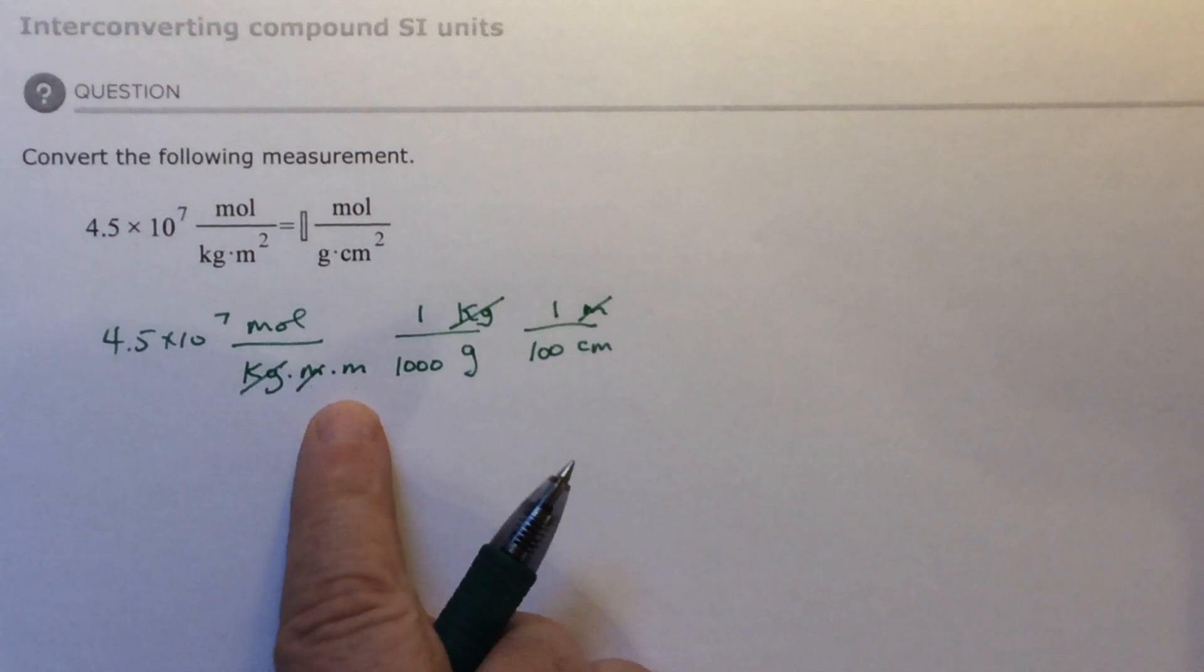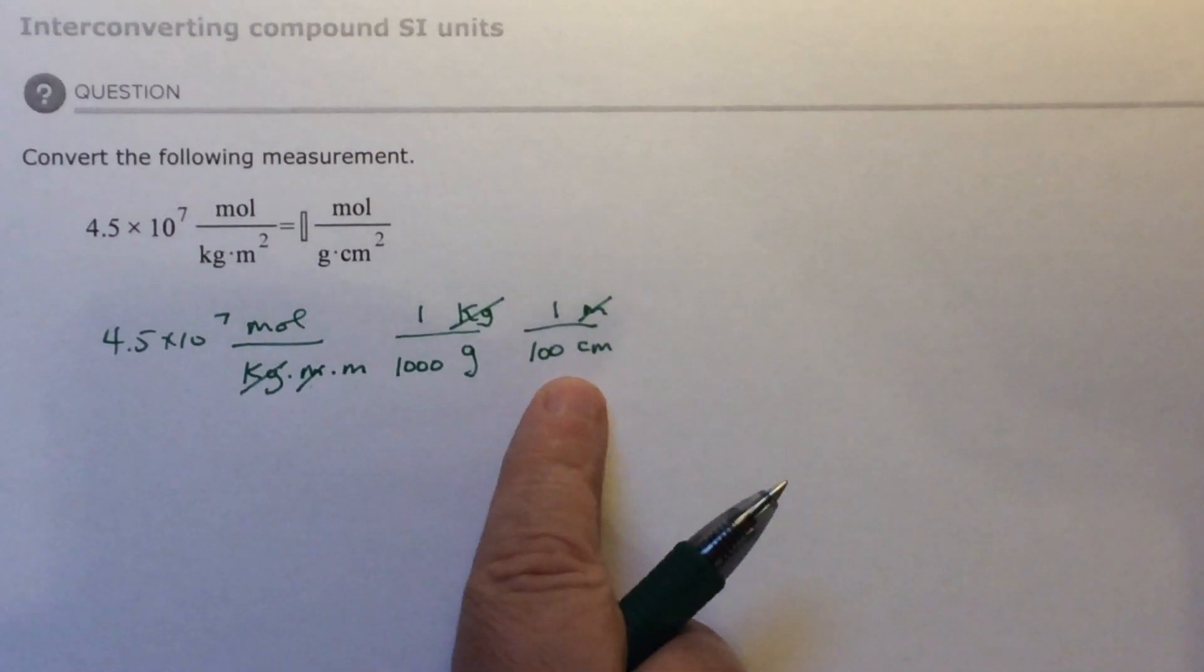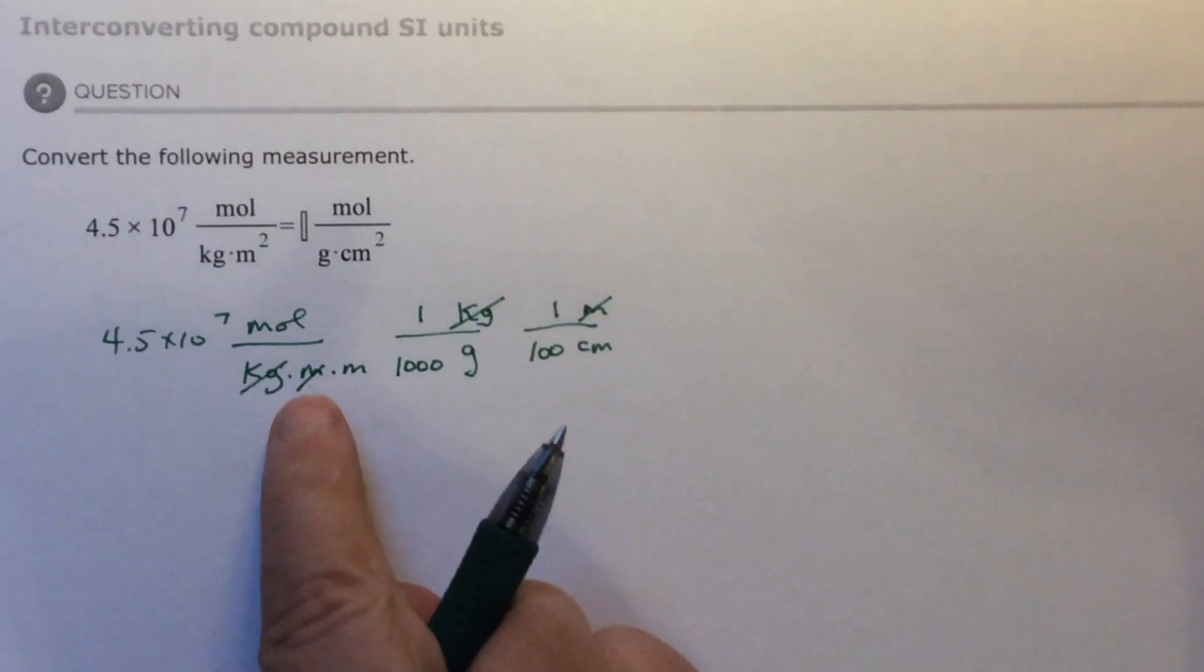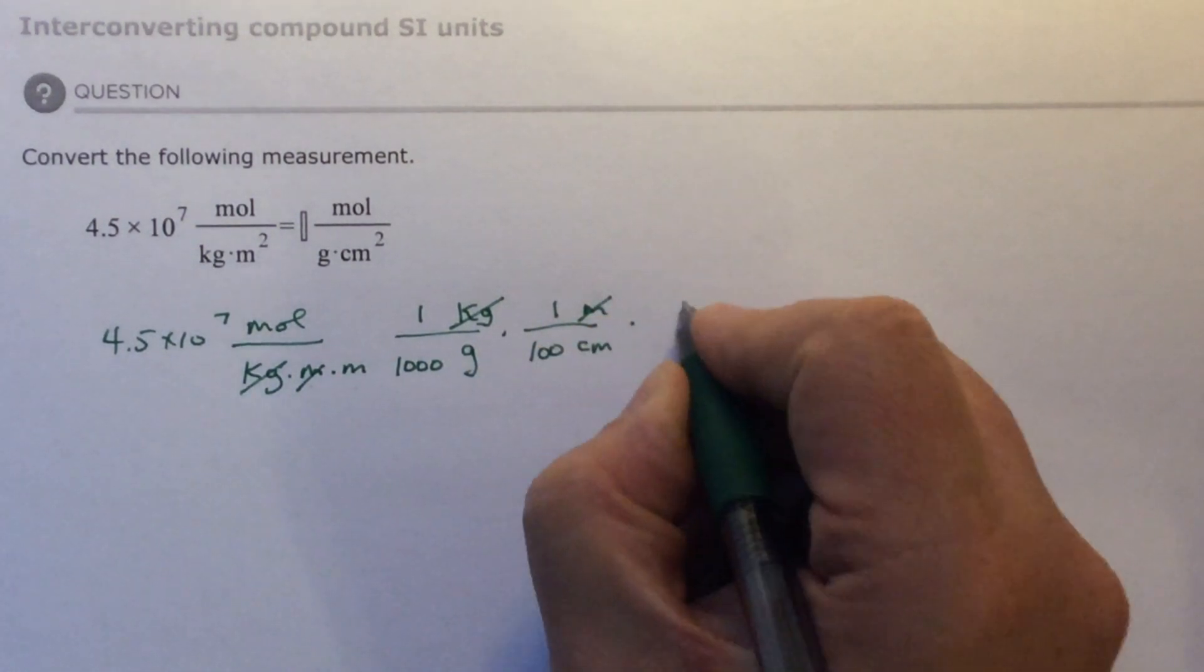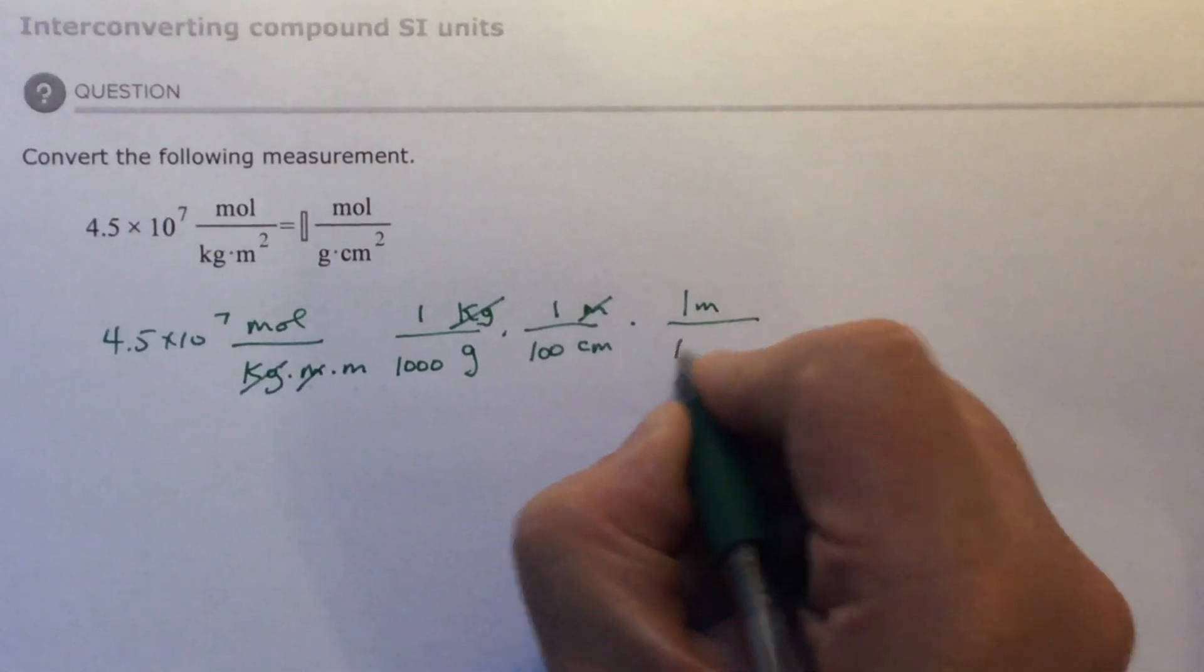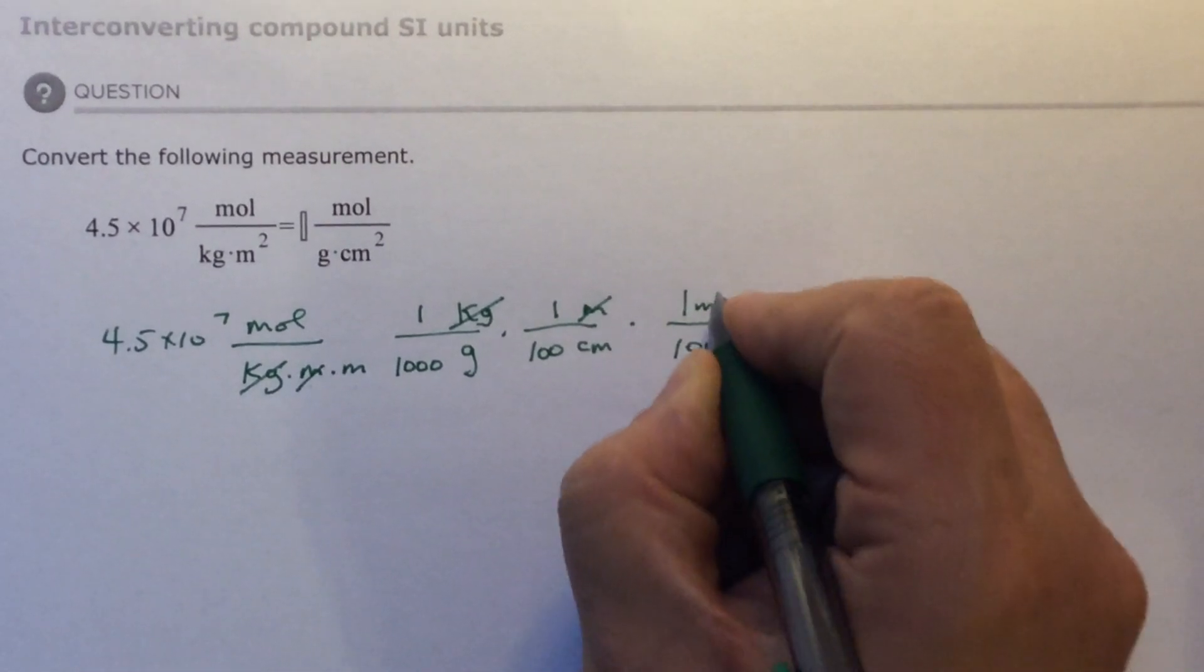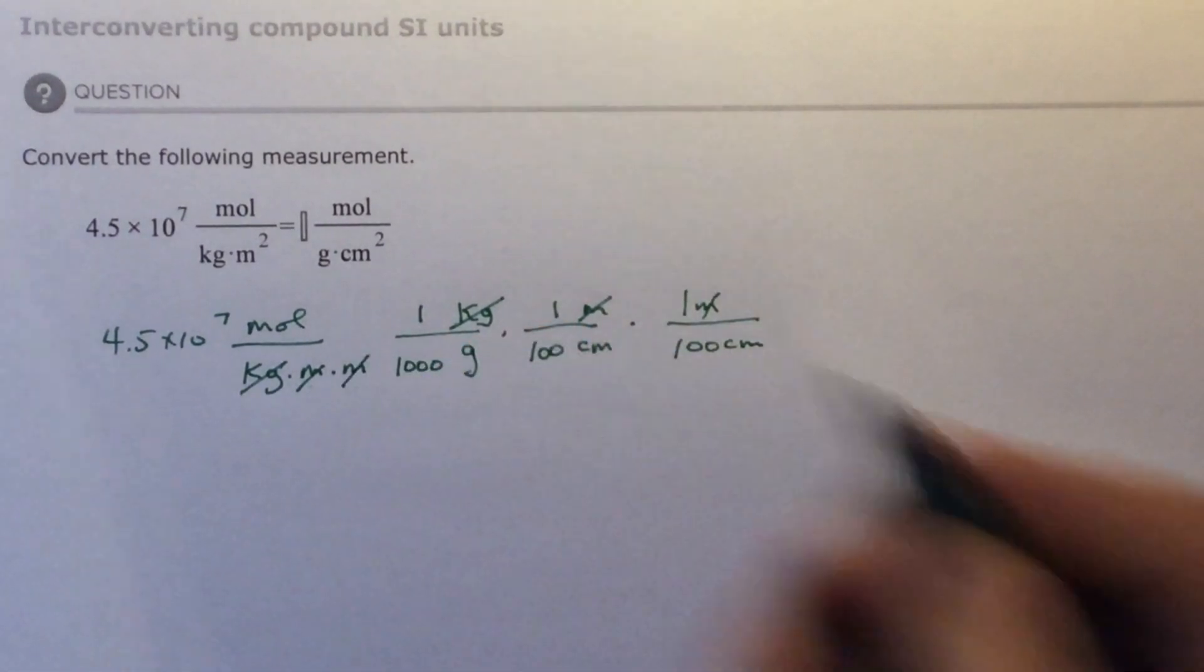But I still have another one to get rid of, so I have to do this step twice. Once to get rid of the first meter and then again to get rid of the second. So I'm going to multiply it a second time. One meter equals 100 centimeters, and meter is going to cancel with meters.